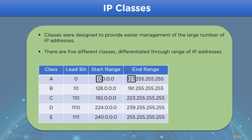We have Class A, which accommodates networks with a large number of network hosts, where the first bit in the octet is always 0, with number values ranging from 0 to 127. Then we have Class B, which can fulfill the requirement for a moderate number of network hosts. The leading bits are 1 and 0, and the network ID ranges from 128 to 191.